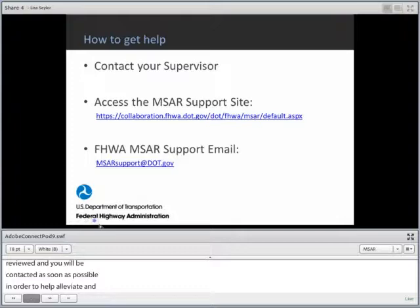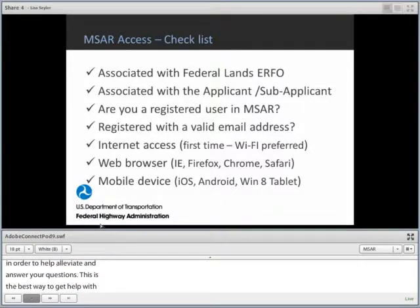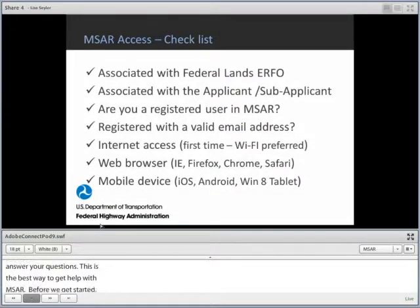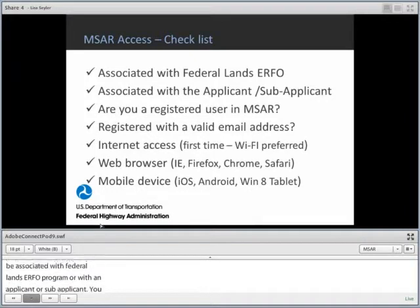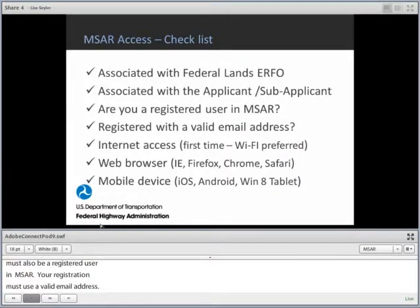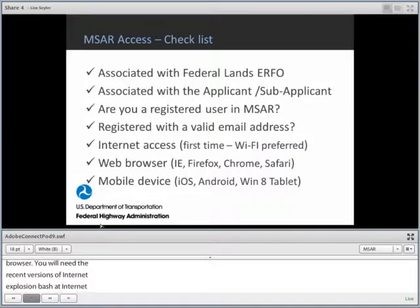Before we get started, there are a couple of things you need to have in place to access MSAR. First, you must be associated with the Federal Lands ERFO program or with an applicant or sub-applicant. You must also be a registered user in MSAR, and your registration must use a valid email address. You will need internet access — we highly recommend connecting via Wi-Fi the first time. You will also need a web browser (recent versions of Internet Explorer, Firefox, Chrome, or Safari) and a mobile device, which can be an iOS smartphone or tablet, an Android smartphone or tablet, or a Windows 8 tablet.